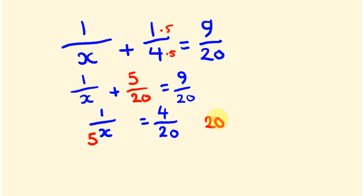You go 1 times 20 is 20, so you multiply this number and this number. This will be equal to this number times this number, so 20 equals 4x and therefore x equals 5. So we can substitute this and say 1/5 plus 1/4 equals 9 over 20.